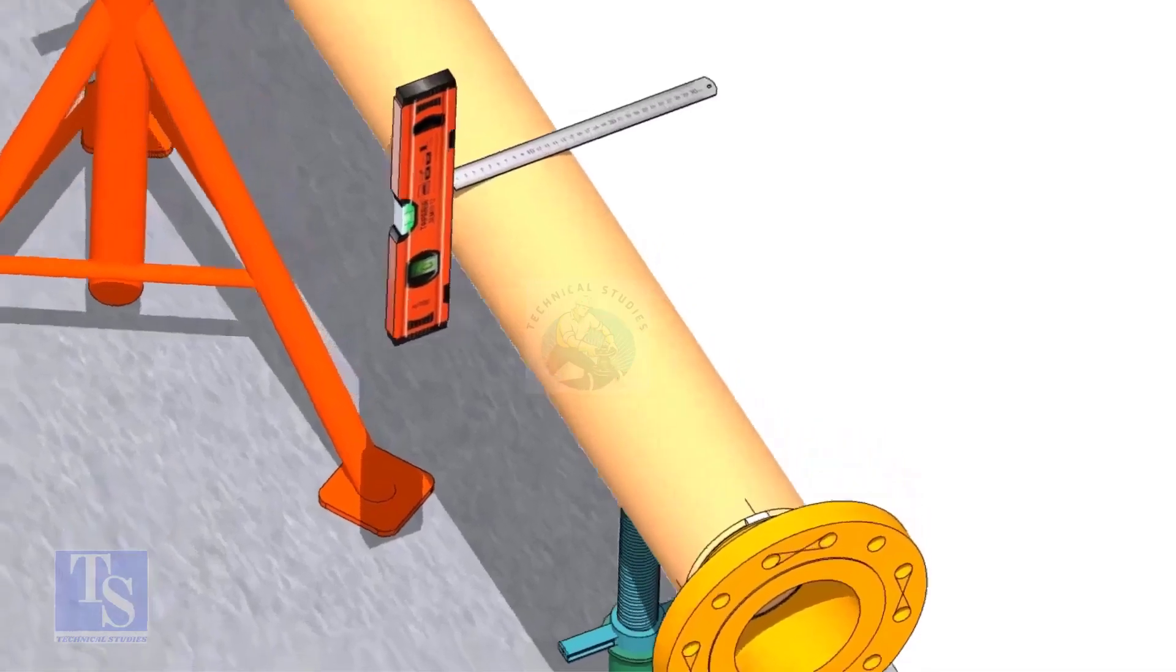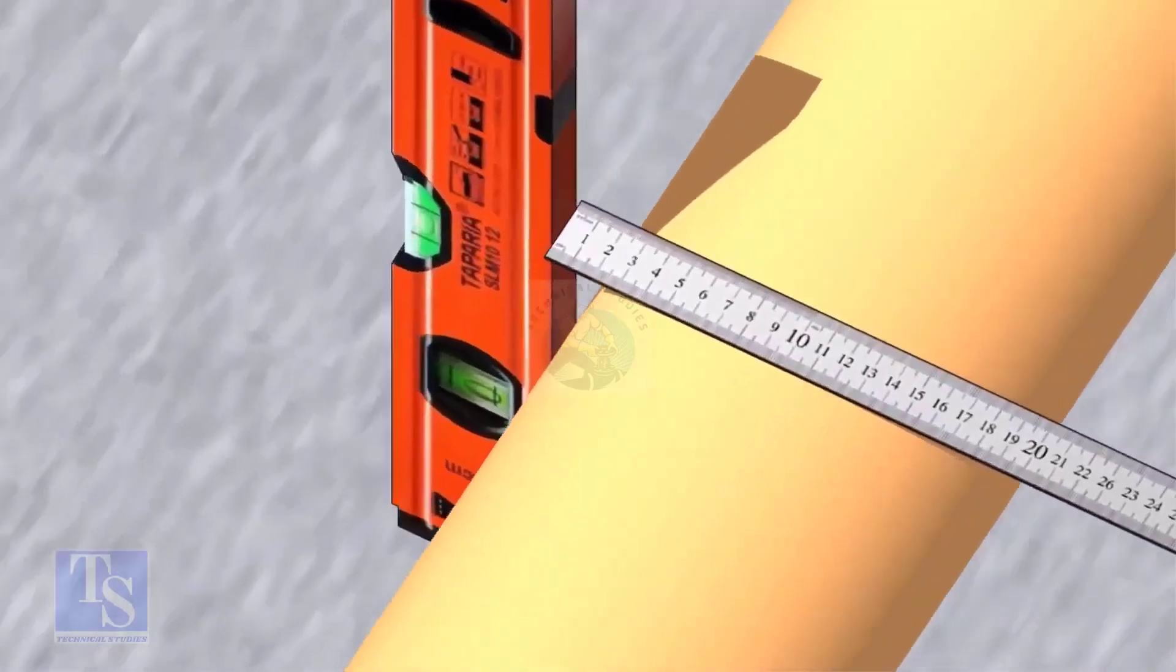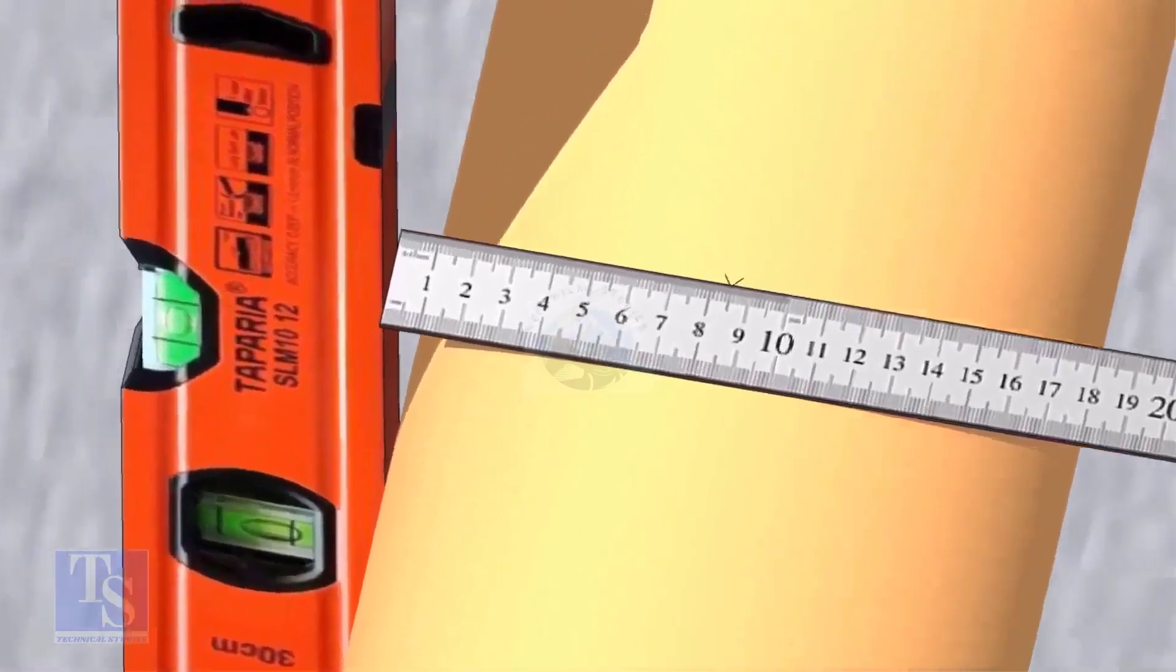Mark the center of the pipe. OD of a 6 inch pipe is 168mm, so mark the half OD 84mm as shown.